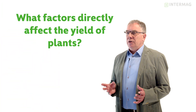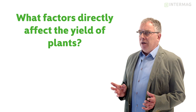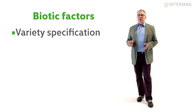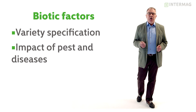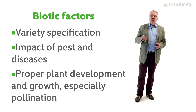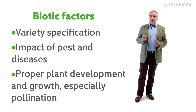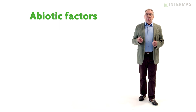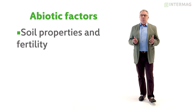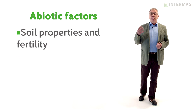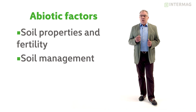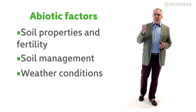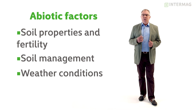Someone could ask: what factors directly affect the yield of plants? Basically we have two groups of those factors. Biotic factors like variety specification, impact of pests and diseases, proper plant development and growth — especially flowering — and pollination and fertilization, which means seed formation. And a number of abiotic factors such as soil properties and fertilization, which is very important, soil management during crop growing, and weather conditions, which are very important especially during the flowering of plants.